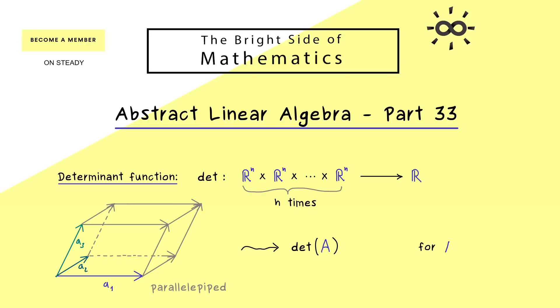However, since we have this calculation formula, we can also extend the whole function to complex valued matrices. Therefore, in general, the determinant of a matrix is a complex number.